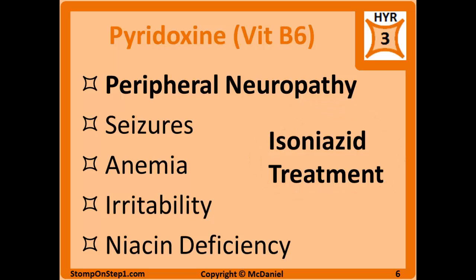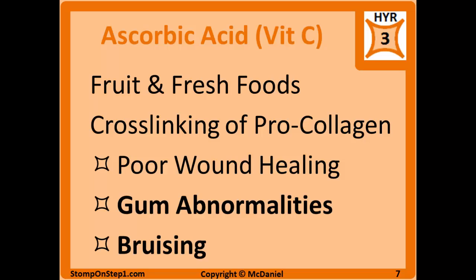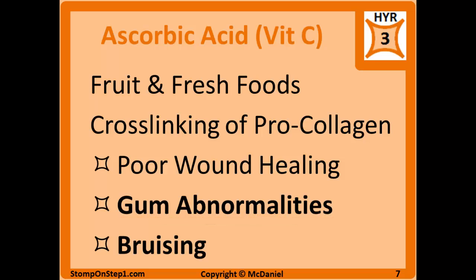Ascorbic acid or vitamin C is found in a lot of fruit and other fresh foods. It is necessary for hydroxylation of certain amino acids and collagen, which is very important in the cross-linking of individual pro-collagen chains in the collagen triple helix. Without this hydroxylation, the collagen is very weak and structures made up of collagen can be easily damaged, leading to poor wound healing, problems with the gums such as pain and bleeding, loose or missing teeth, and easy bruising presenting as purpura, ecchymosis, and perifollicular hemorrhages.